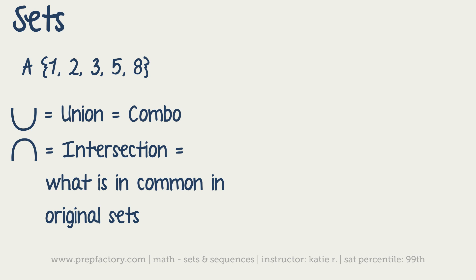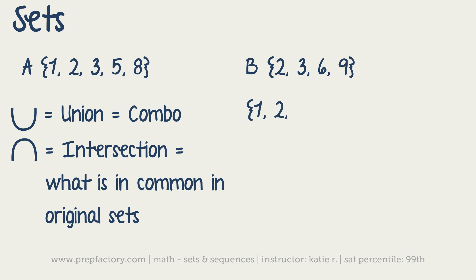So if set A is {1, 2, 3, 5, 8} and set B is {2, 3, 6, 9}, the union adds everything together without repeating. So you don't say 'one, two, two' just because there are two twos — you just say one, two, three, five, six, eight, nine. That's your union.